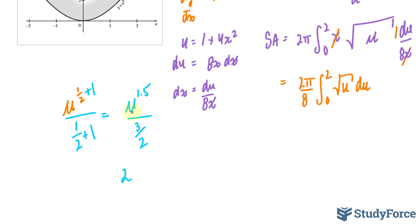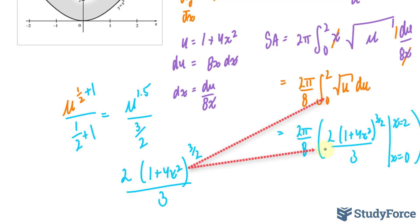2 times u, which is equal to 1 plus 4x squared, to the power of 3 over 2 over 3. I've just found the integral of the following. So I'm going to replace this part of the expression with what I just found. So I'll need to evaluate this when x equals 2 and evaluate that when x equals 0.